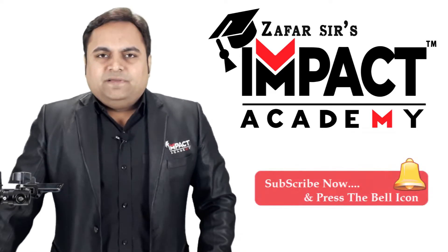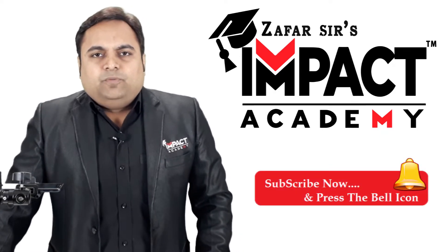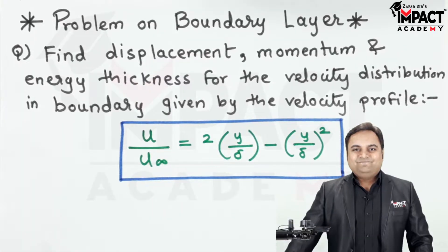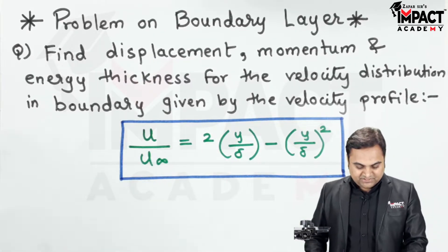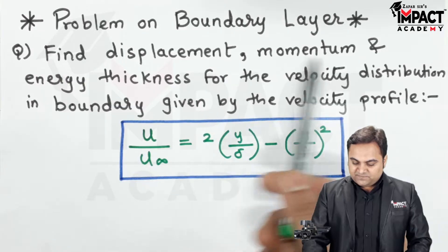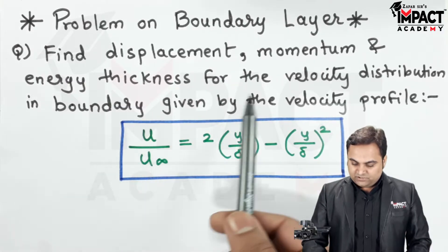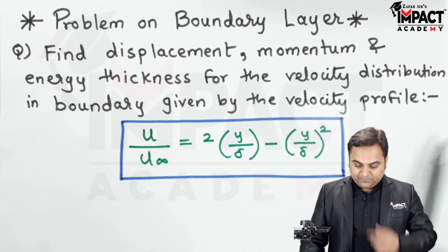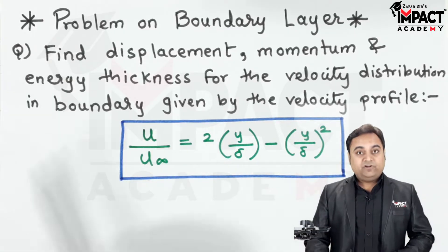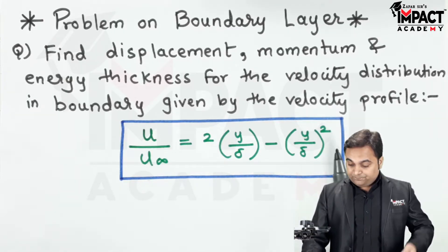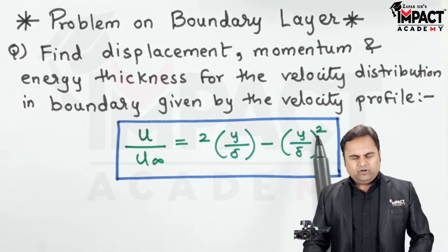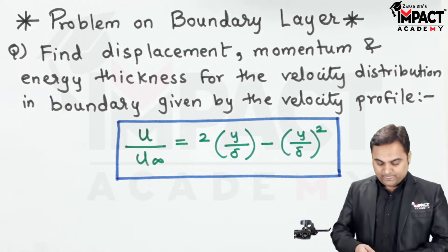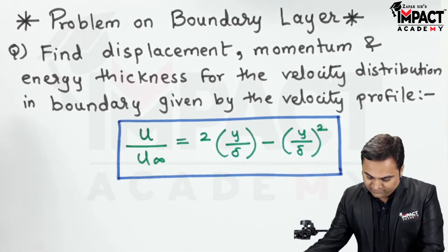Hi friends, in this video I will be explaining a problem on boundary layer. The question is: find the displacement, momentum, and energy thickness for the velocity distribution in the boundary layer, given by the velocity profile. This velocity profile is also called a square profile or parabolic profile because the power is 2.